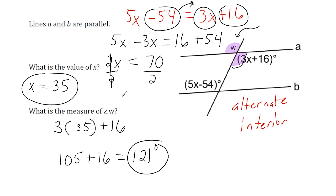One thing to remember: when you're asked to find the value of x, most of the time that's not an angle measure — it's just what x equals. But once you plug x into one of these expressions, it gives you the actual angle measure. That's why I labeled the angle answer with a degree symbol, and x was just 35 — not 35 degrees.